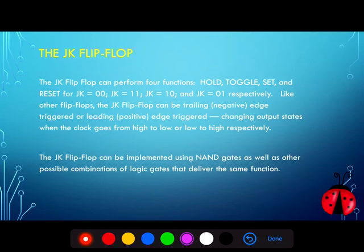The JK flip-flop gives us the best of all worlds: the function of the D flip-flop in the hold condition, the function of the toggle flip-flop with the J=K=1 input condition, and the functions of the set-reset latch with JK equal to one-zero and zero-one respectively. Like other flip-flops, it can be either trailing or leading edge triggered, changing output states when the clock goes from high to low or low to high. The JK flip-flop can be implemented using NAND gates as well as other logic gate combinations. Thanks for joining us as we continue to explore the world of digital logic and circuits.